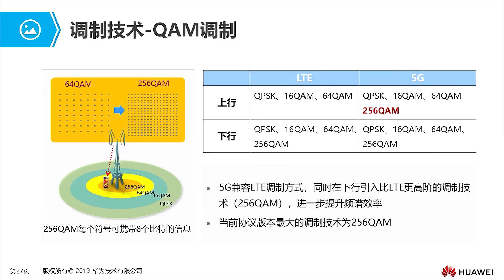In 5G, both uplink and downlink can support 256QAM modulation. Uplink 256QAM may be widely used in 5G. Looking ahead, 1024QAM modulation will also be introduced, to be defined in subsequent protocol versions. 5G introduces these higher-order modulation methods while remaining compatible with 4G modulation techniques, adding 256QAM and eventually 1024QAM to expand the modulation toolkit.